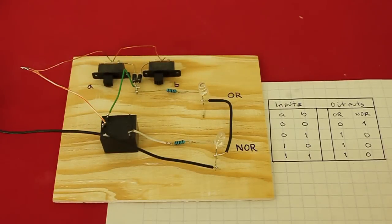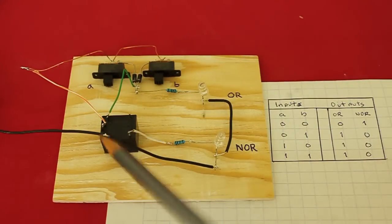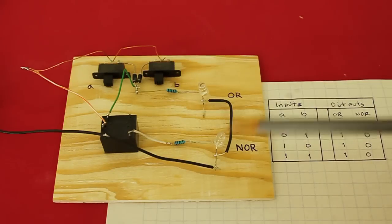Okay, here's our circuit. We have the two inputs, A and B, the relay, and the two LED lamps.